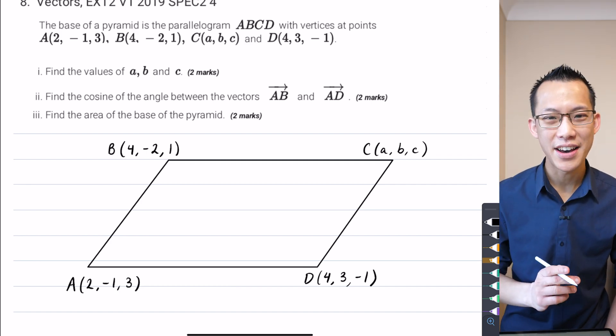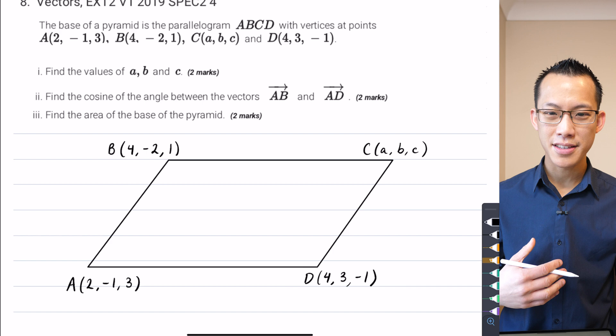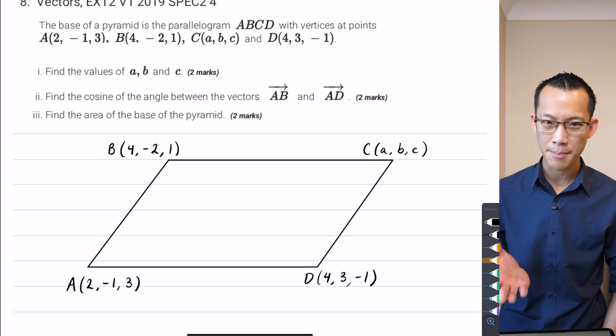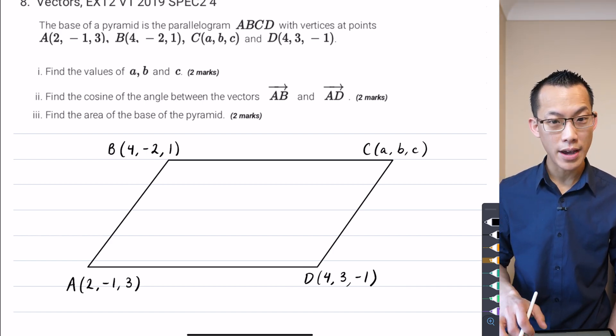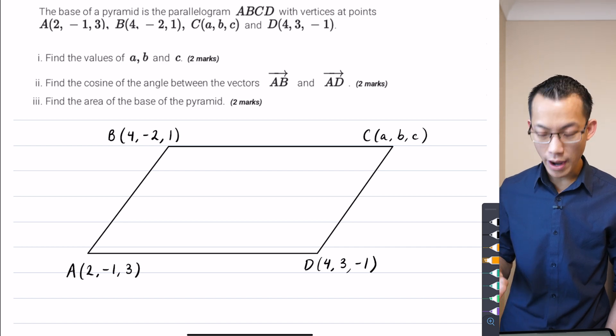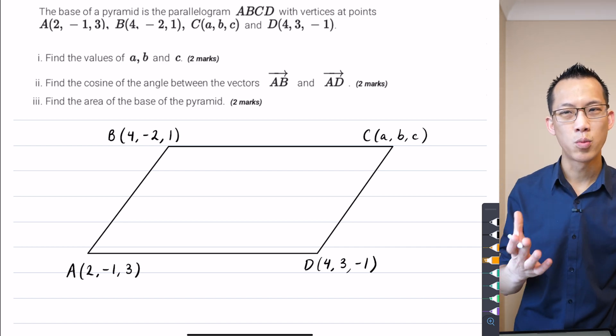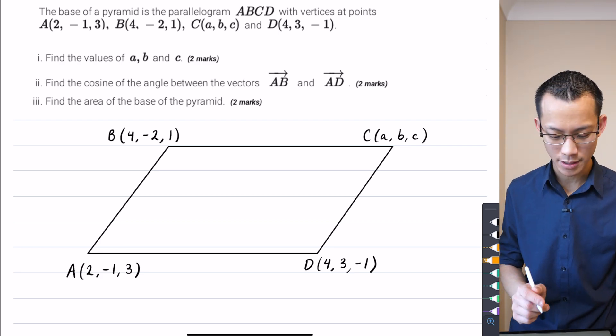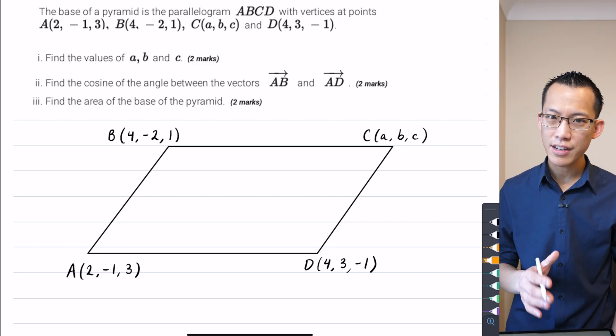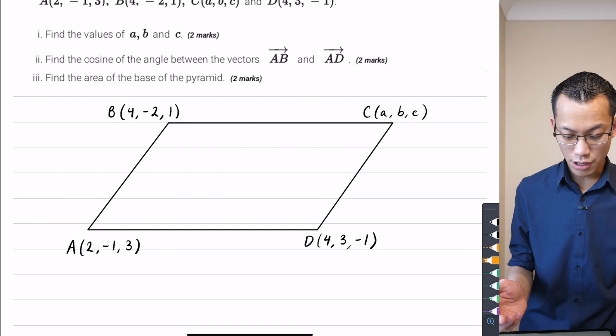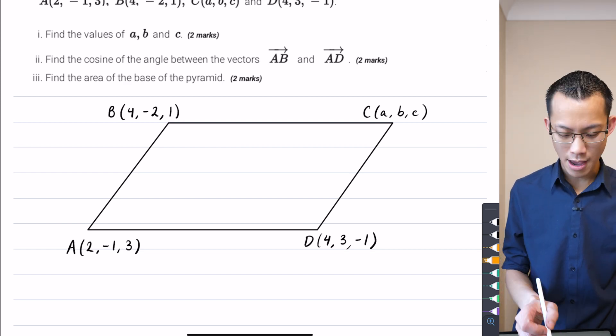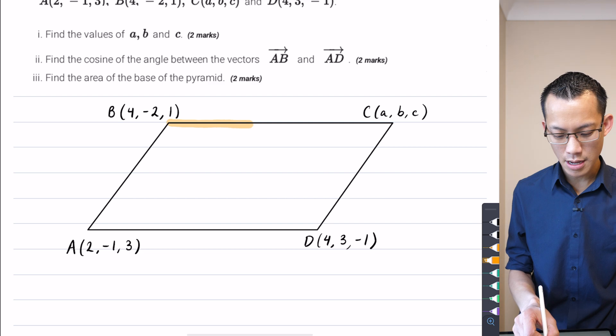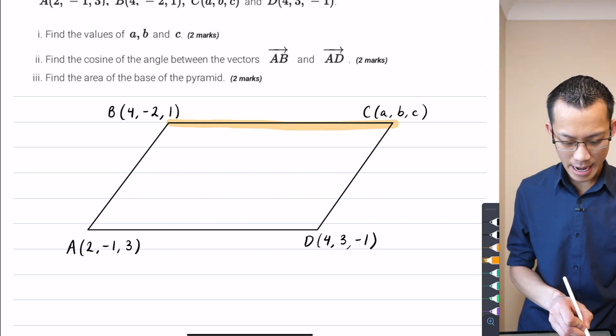So that's why I've drawn my parallelogram in two dimensions. The first thing we need to do is find the values of A, B, and C, where one of the coordinates is this point capital C. Now there's a bunch of different ways to go about this, but the way I went about it was to recognize one of the properties of a parallelogram that we can take advantage of in terms of vectors. If you look at any two opposite sides, I went with BC and AD.